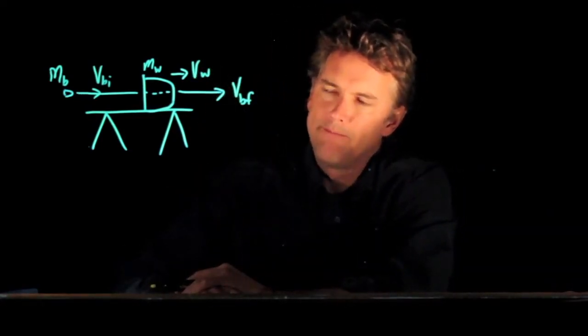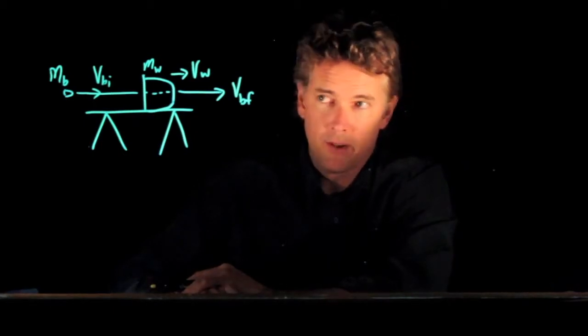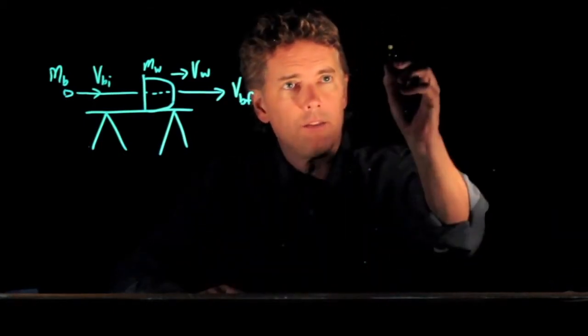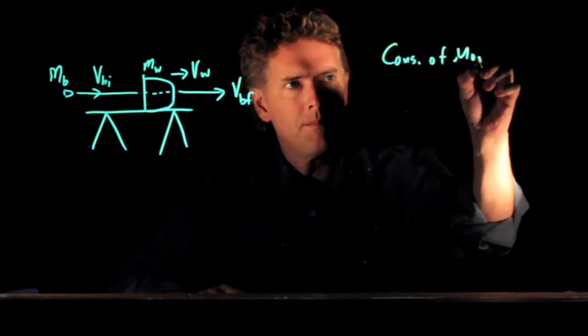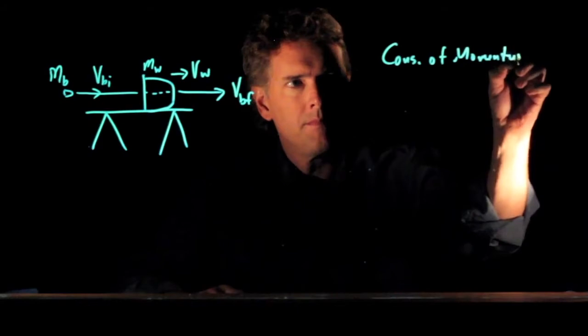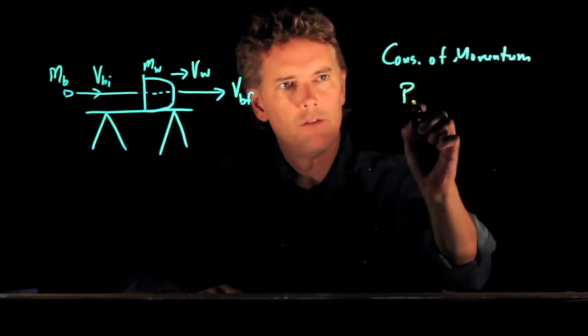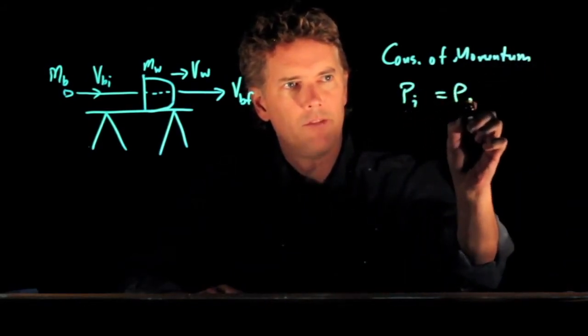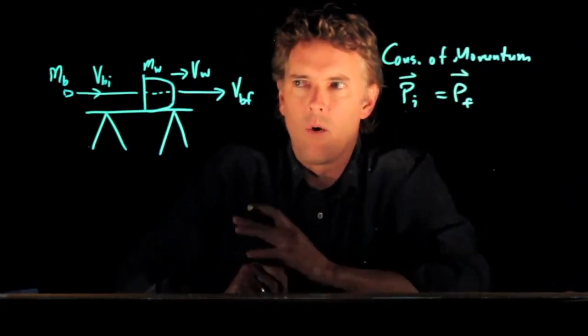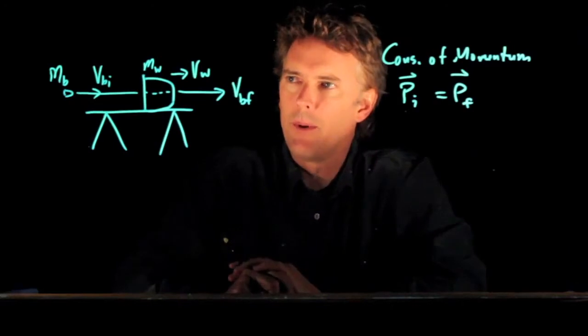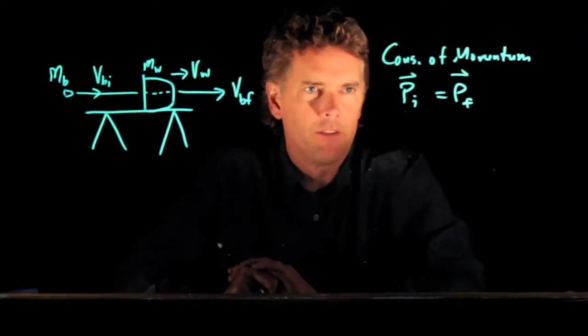So this is a conservation of momentum problem. Let's write down what we have for conservation of momentum. What we know is pi for the system has to be equal to pf. Now this is all one dimension so we don't have to worry about two-dimensional vectors in this case.